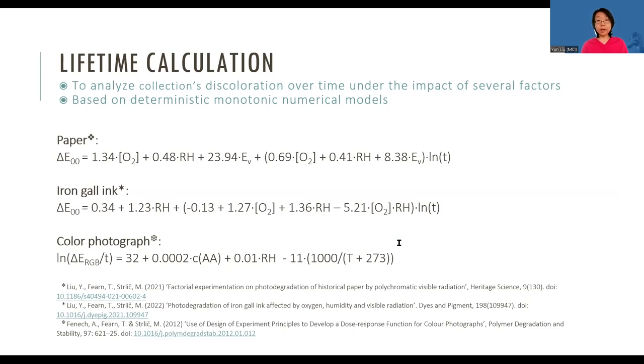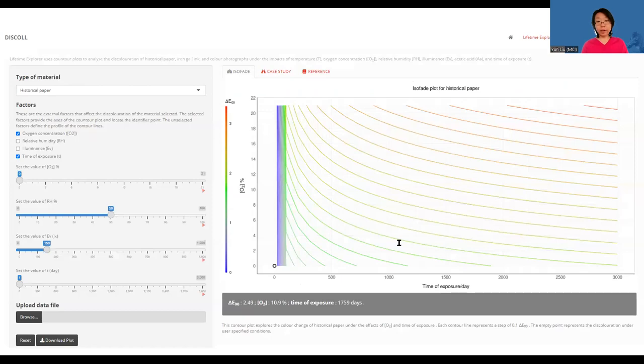The lifetime prediction is performed via this interface shown on the screen. The inputs can be defined on the left, and the output is presented on the right. The output is presented by a 2D contour plot, where each contour line represents the same amount of discoloration. Based on this plot, we can interactively explore how the combinations of the factors affect the discoloration of the type of material we're interested in.